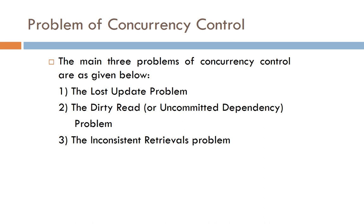There are basic problems in concurrency control — problems that arise when more than one user works simultaneously. The three main problems of concurrency control are: first, the Lost Update Problem; second, the Dirty Read Problem, also known as the Uncommitted Dependency Problem; and third, the Inconsistent Retrievals Problem.